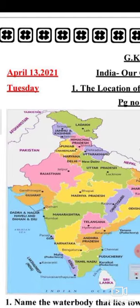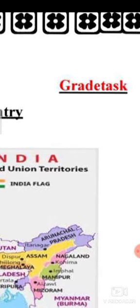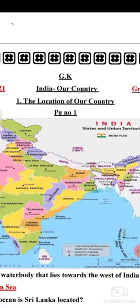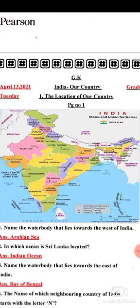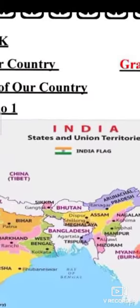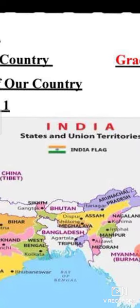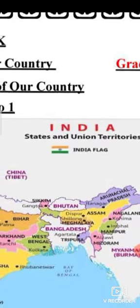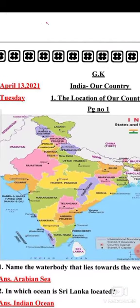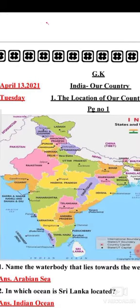On the left side you will write today's date very neatly and on the right side you will write the chapter task. Now, India is our country and in India there are 29 states and 8 union territories. Earlier it was 7, but now one more was added — that is Jammu and Kashmir — making it 8 union territories.